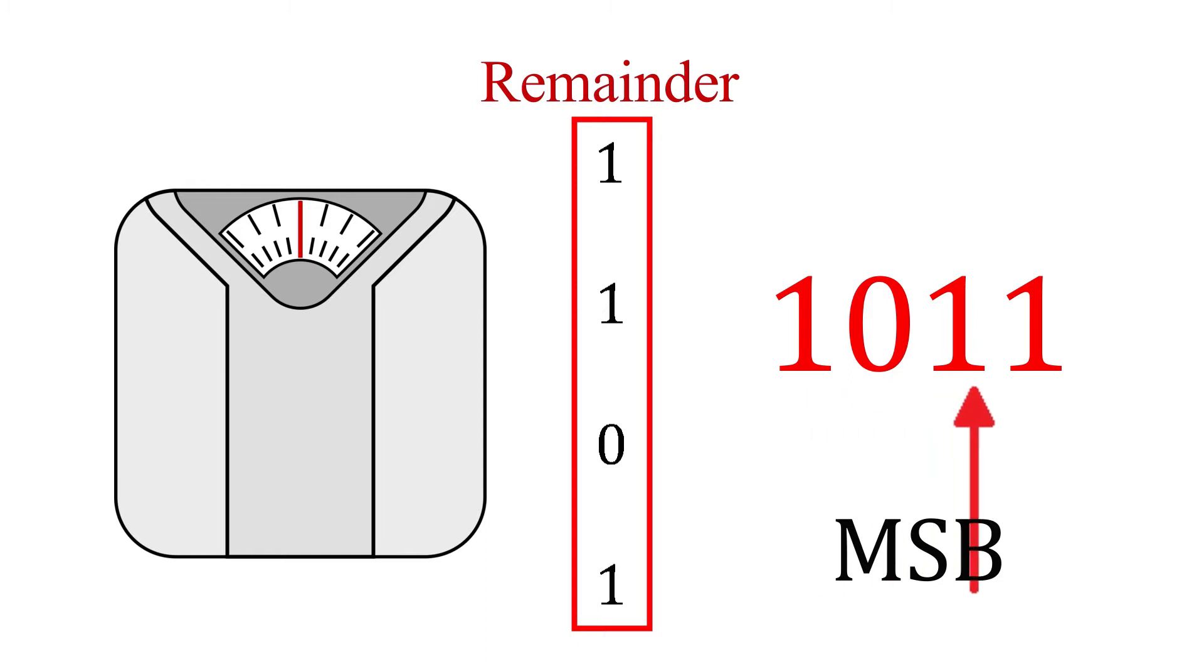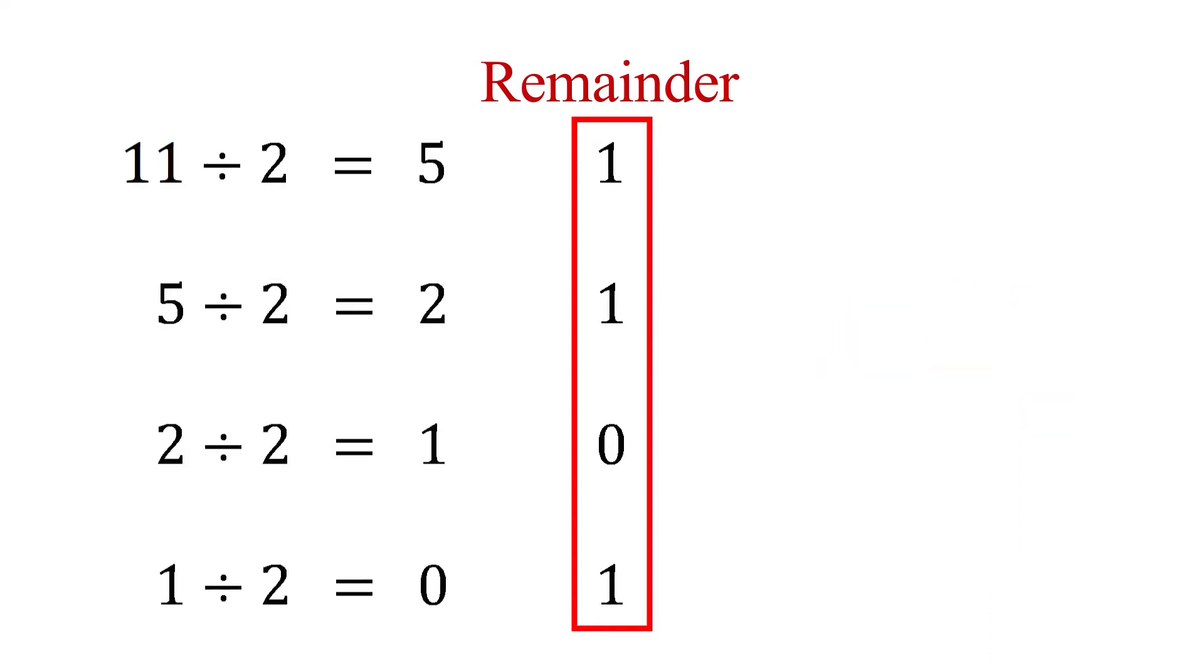So in contrast, the last digit is the least significant digit because changing this digit does not affect the value quite as much. If the scale said 152 pounds, you wouldn't be quite as shocked, since 2 pounds is not nearly as significant as 100 pounds.